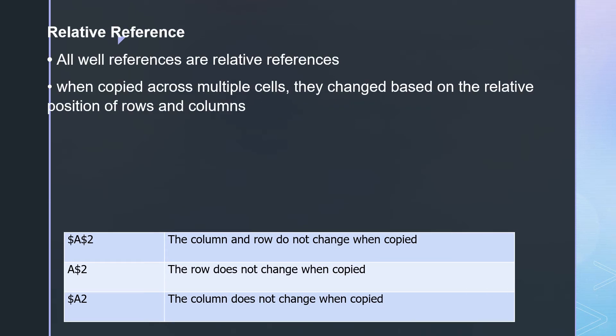Relative reference: by default, all cell references are relative references. When copied across multiple cells, they change based on the relative position of rows and columns. For instance, if you copy the formula =A1+B1 from row 1 to row 2, the formula will become =A2+B2. Relative references are especially convenient whenever you need to repeat the same calculation across multiple rows or columns.